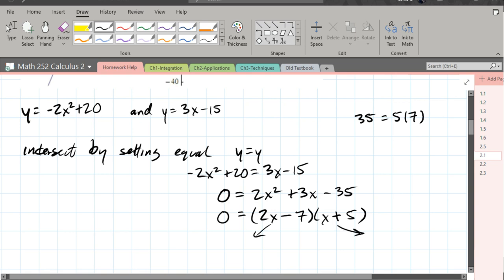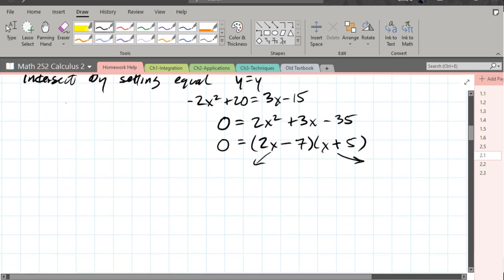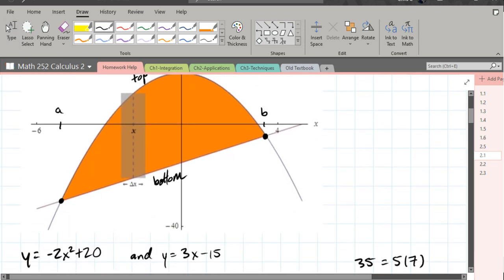We got zero product property. So that means each of these are equal to zero, or 0 equals x plus 5. So we got negative 5 is x and 7 equals 2x. 7 halves equals x. So we just got the two x values where they intersect. We got 7 halves is the positive and negative 5 is the negative. That takes care of some of it.